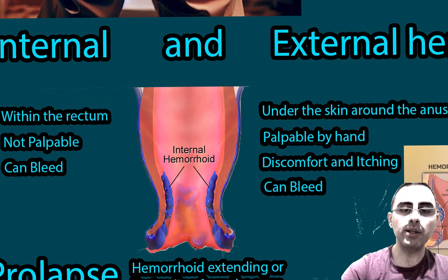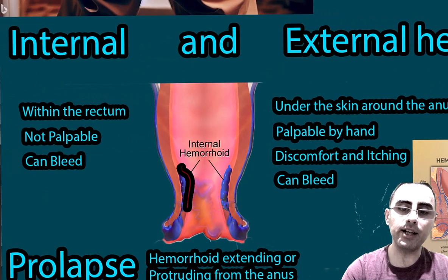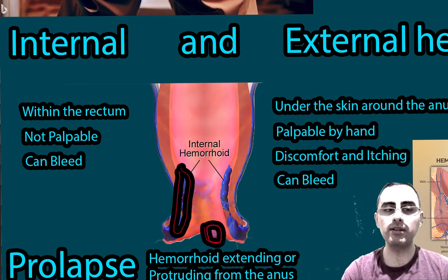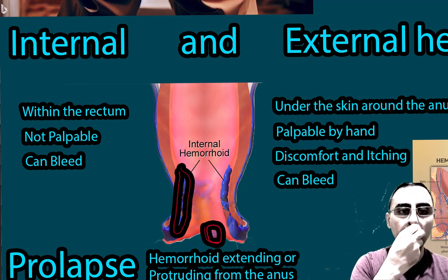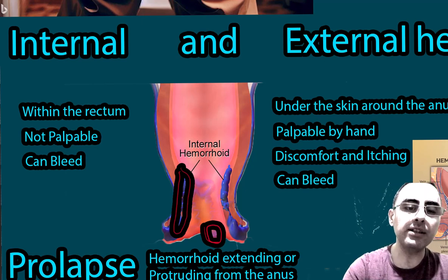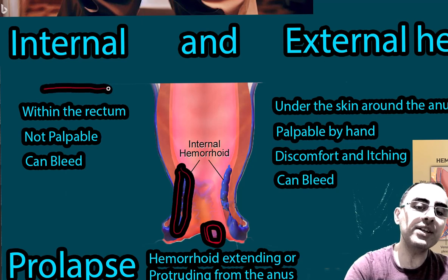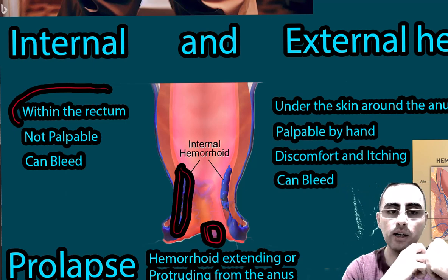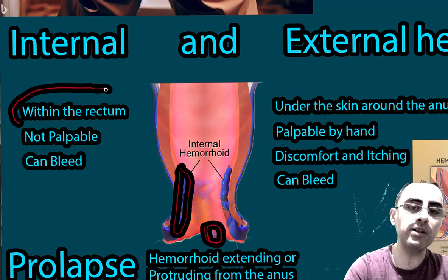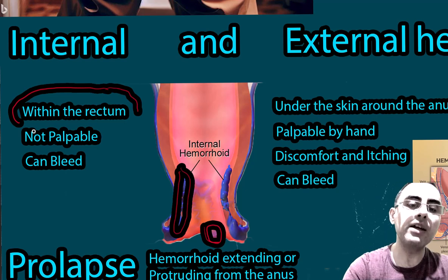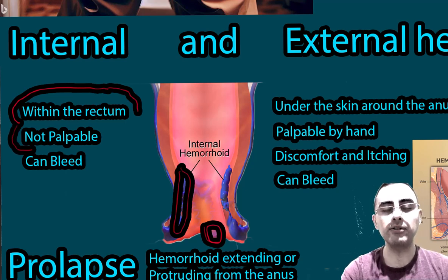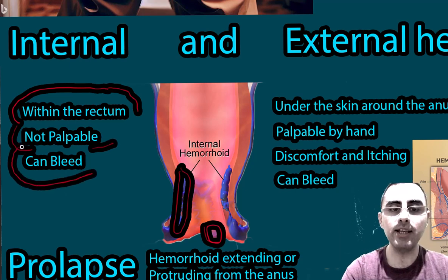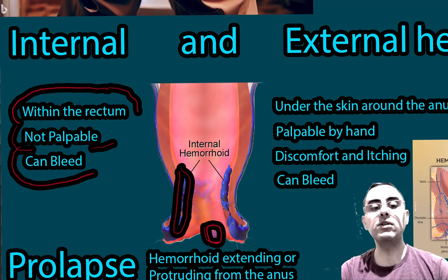We can visualize internal hemorrhoids and external hemorrhoids here. Internal hemorrhoids always start within the rectum, but they can protrude from the anus — they start within the rectum but protrusion is possible. They are not usually palpable by hand, but they can bleed and cause irritation, especially during bowel movement.